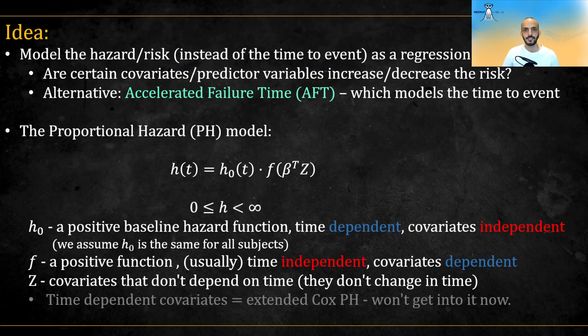The proportional hazard model assumes that the hazard is modeled by two functions: a baseline hazard function h0 which does not depend on the covariates, and another function which does not depend on time. So there are models which allow for time-dependent covariates, but I won't get into them in this video.